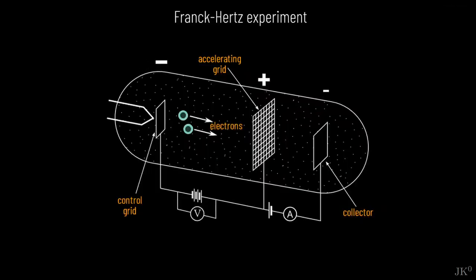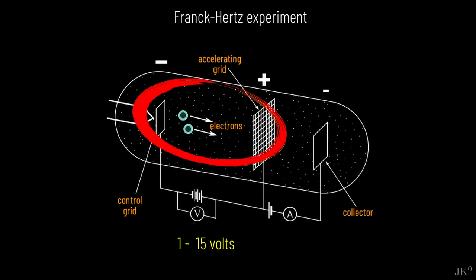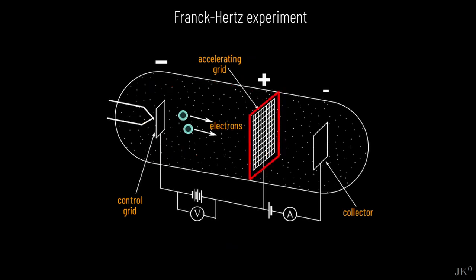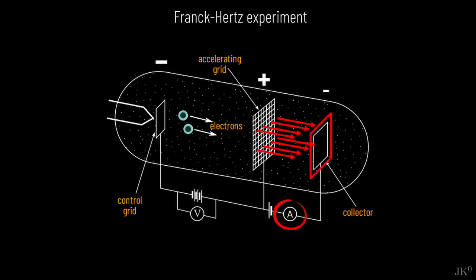This is how the experiment works. The accelerating potential can be varied between 1 and 15 volts. On their way to the positive accelerating grid, the electrons will collide with the mercury atoms and elastically scatter. Then they will go through the accelerating grid, after which they encounter a repulsive electric field. As long as the electrons have more energy than the stopping potential, they will continue to the collector electrode. The collector's current is a direct measure of how many electrons reach the collector. Therefore, as the accelerating potential is increased, the current through the collector will also increase.